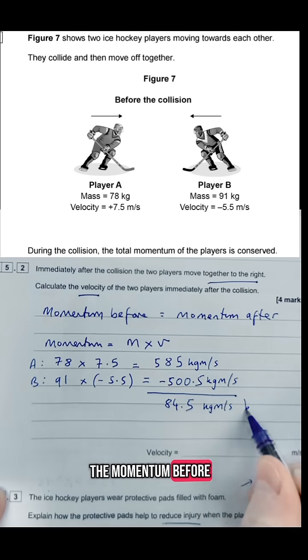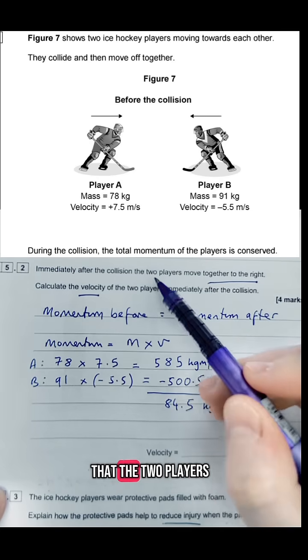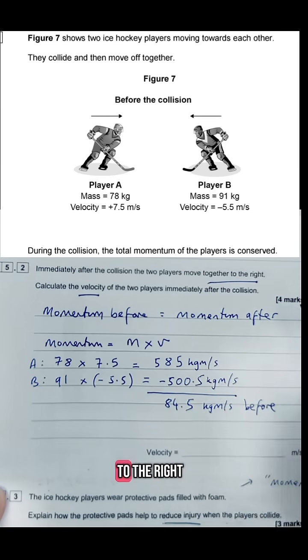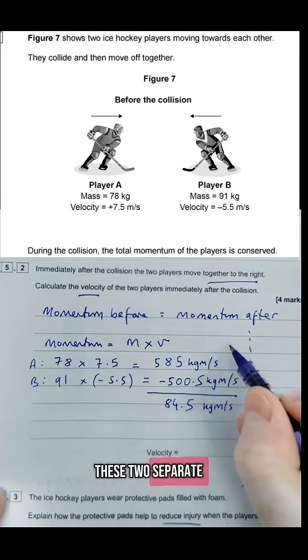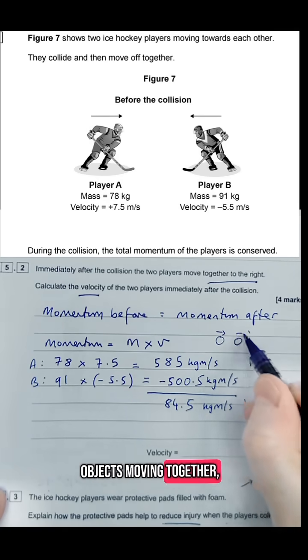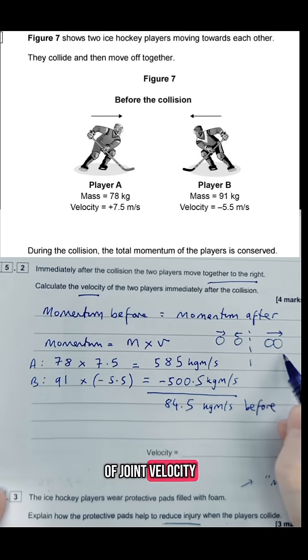Once you've got the momentum before we can use that to work out momentum afterwards. Now the key point here is that the two players move together to the right. So if I was to sort of draw this on before, they are these two separate objects moving together. Afterwards they are stuck together moving off with a sort of joint velocity to the right.